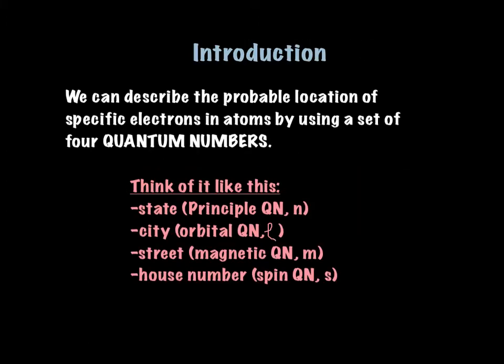Just a little reminder that we can find the location, the most probable location of any electron, by using a set of quantum numbers. And those quantum numbers look like this. The first one is the principal quantum number, designated by the letter n. If you think about the state that you live in, it's just a general area. The second one gets a little bit more detailed. It's like the city. It's called the orbital quantum number. That is a lowercase l, a cursive l.